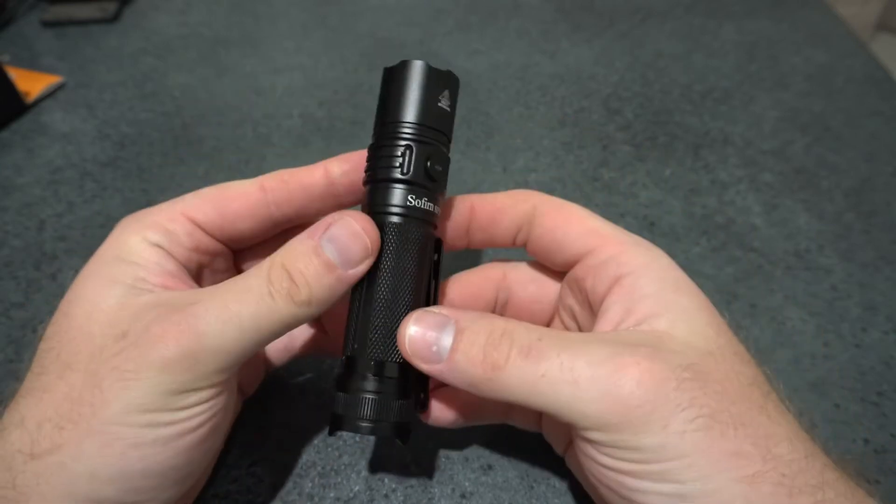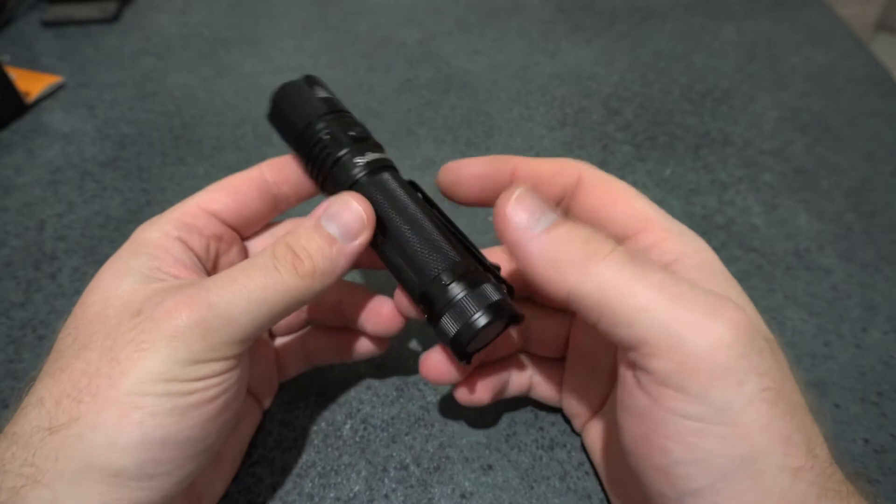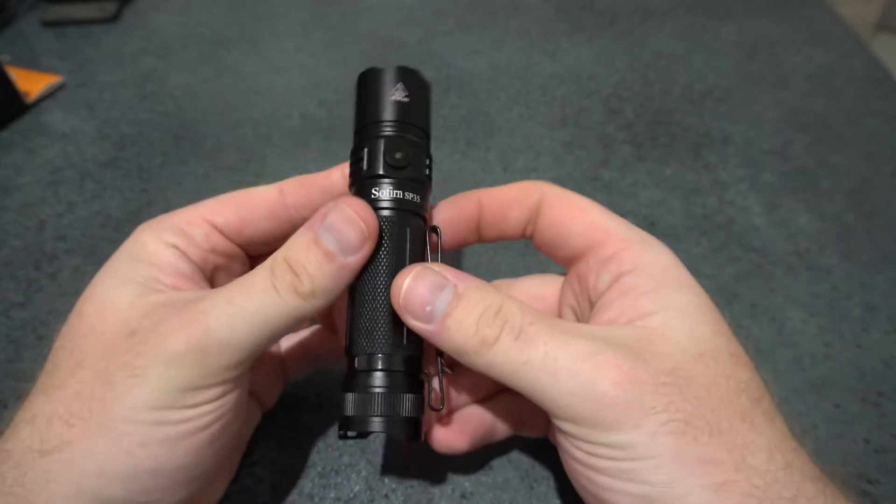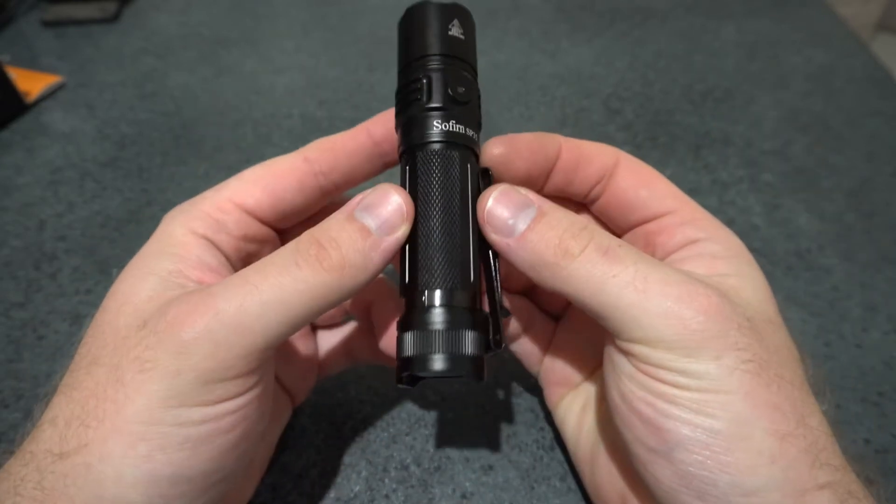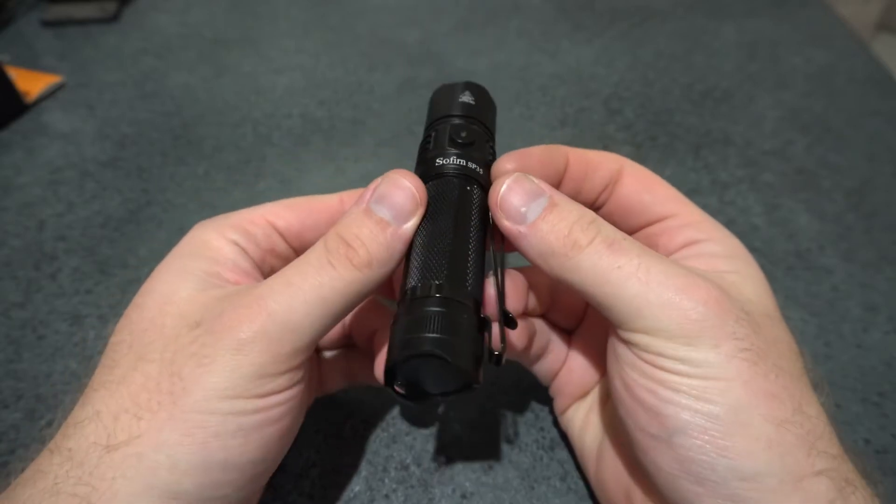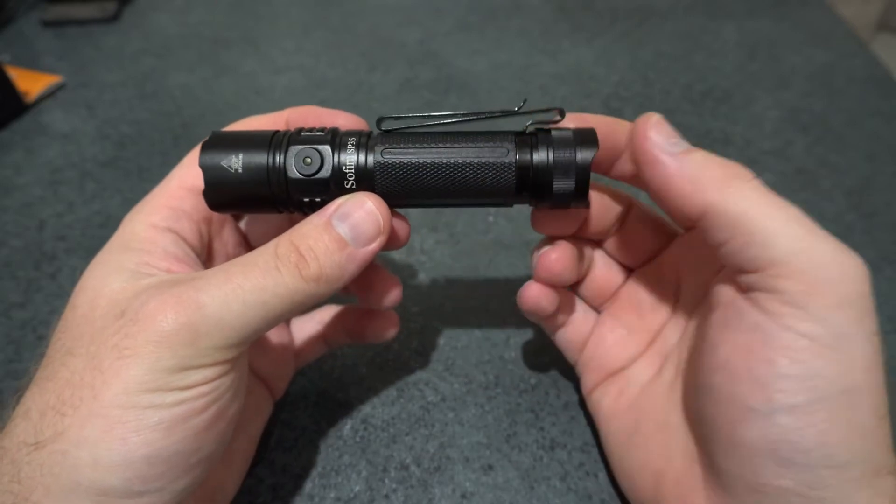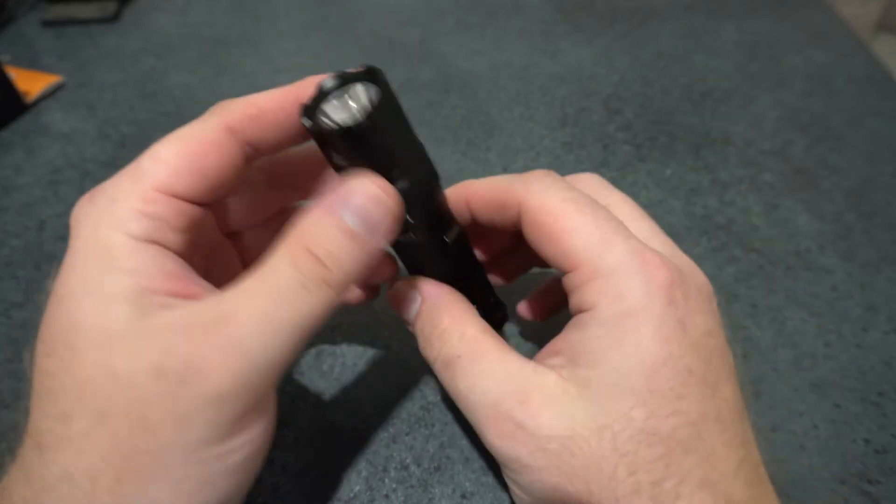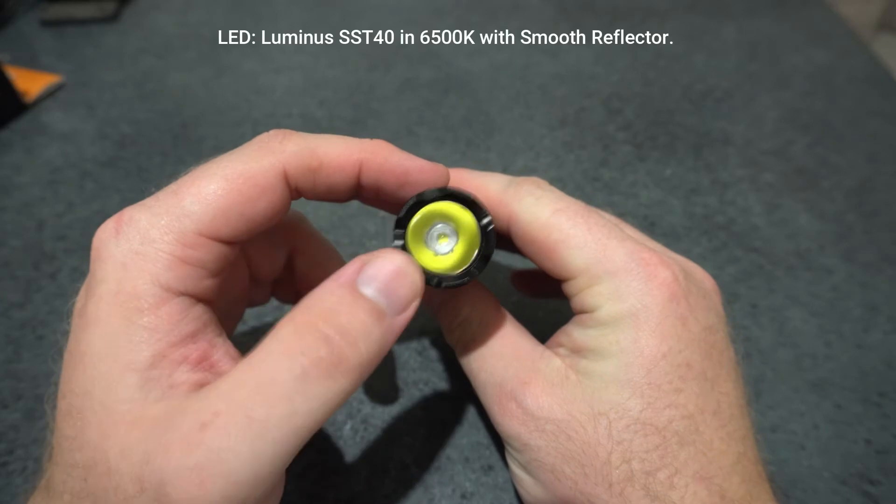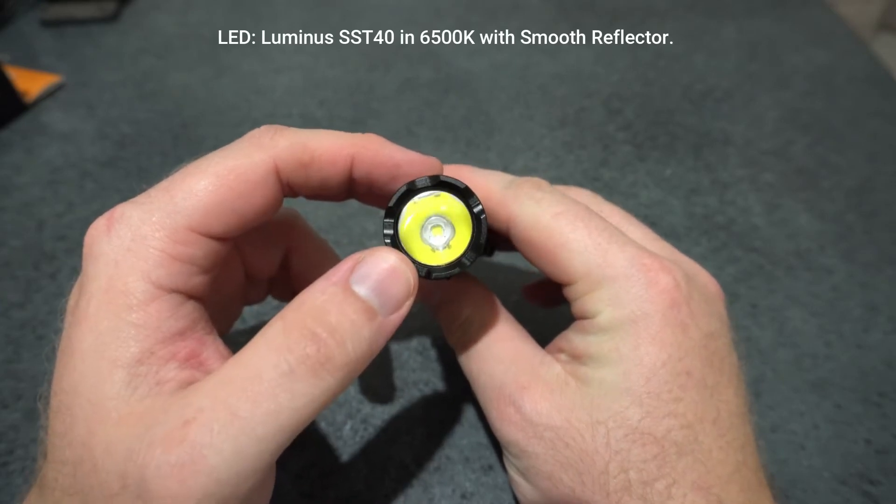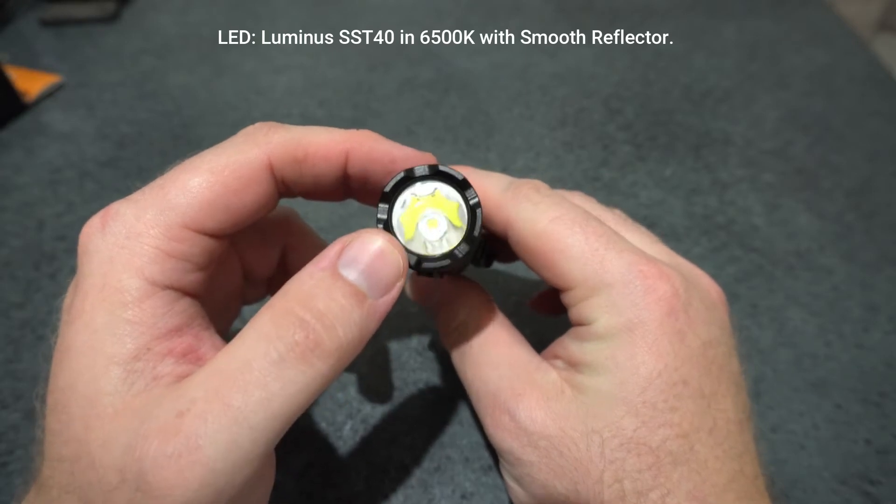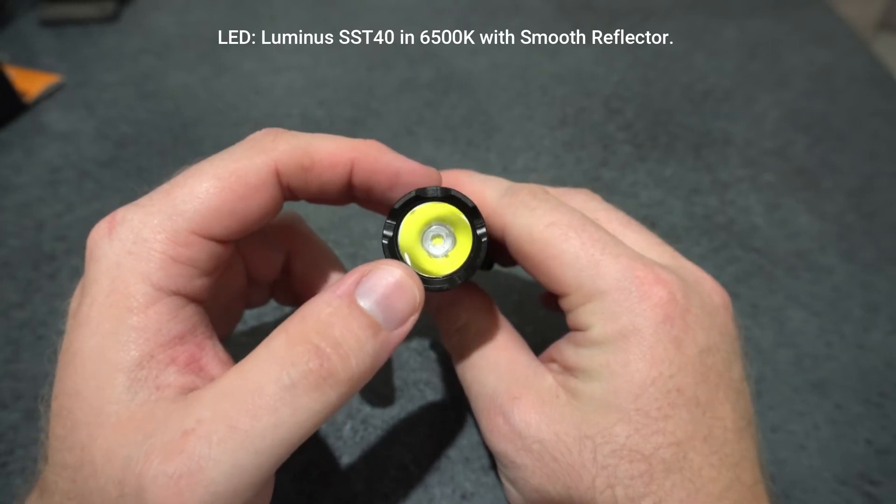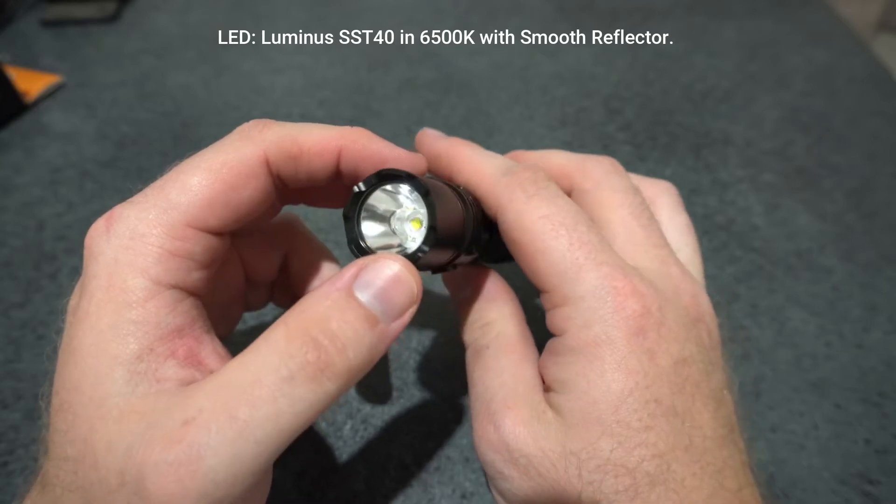One other thing that bugged me, and it might be just me, but with these edges for the tail cap, when it doesn't line up with the switch, it just bugs me a little bit. Not a complaint, still looks fine. So moving on, so we've got the Luminus SST-40 LED used in here. We've got a smooth reflector. So this version that I was sent is the cool white version at 6,500K.